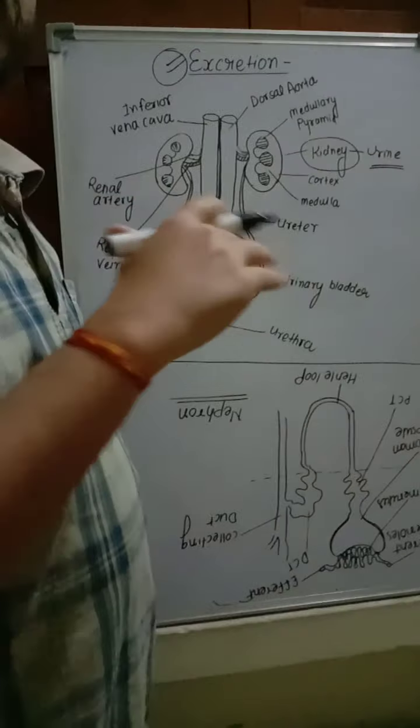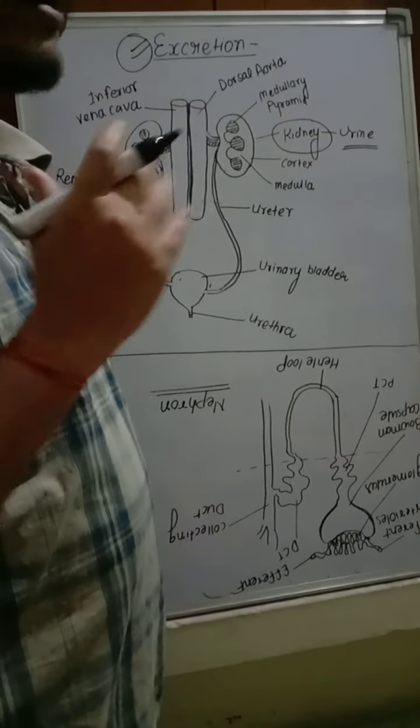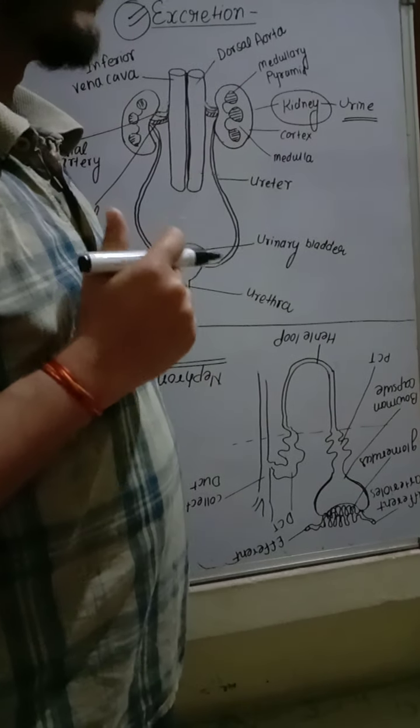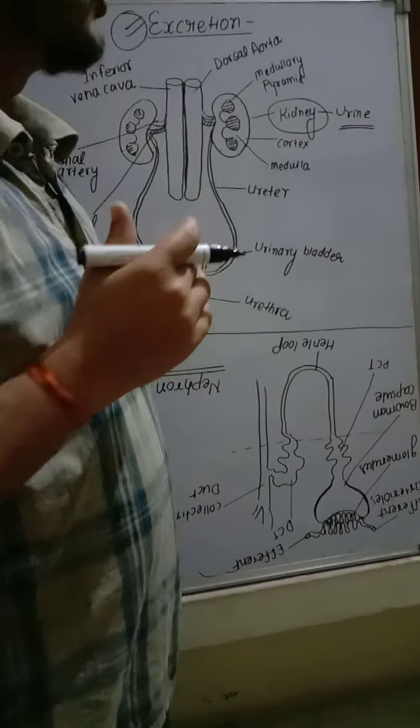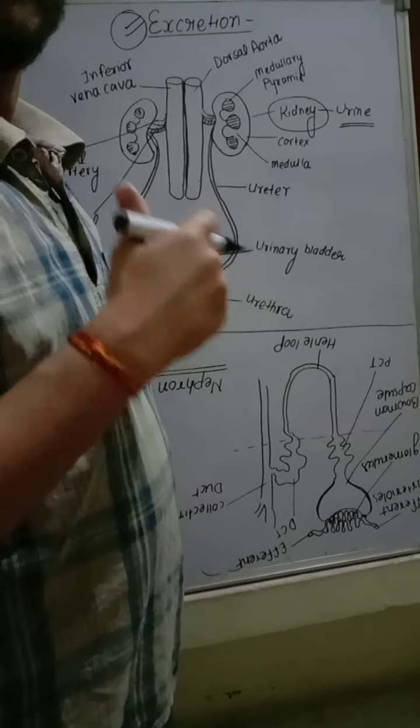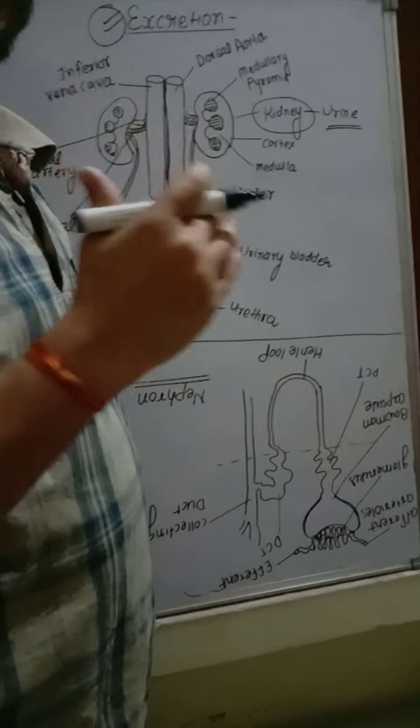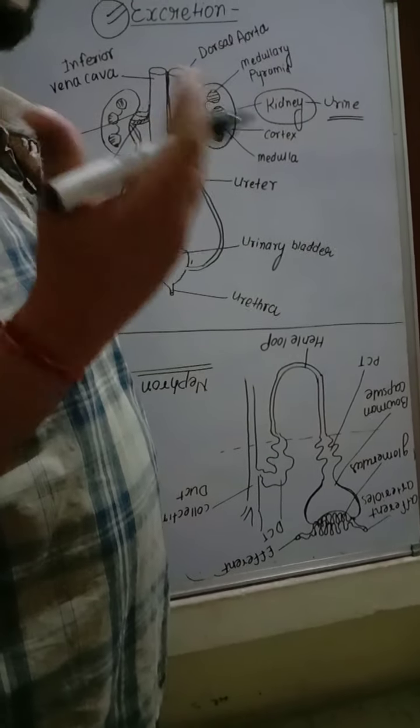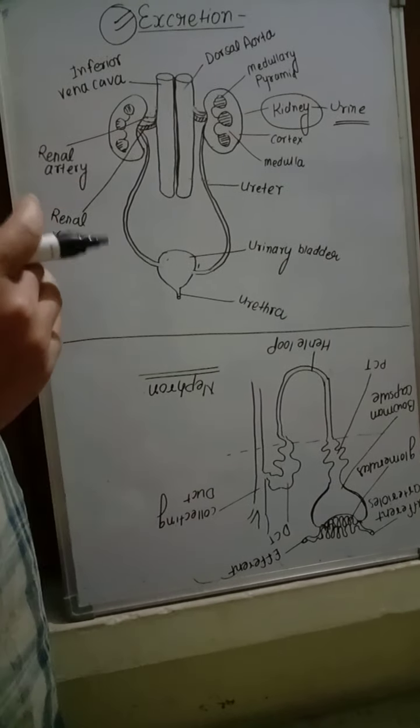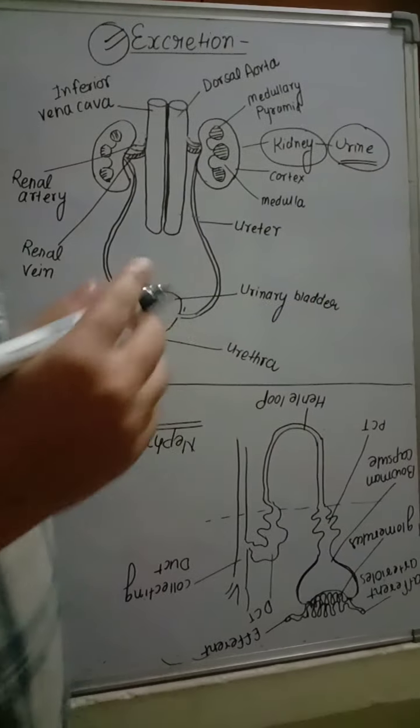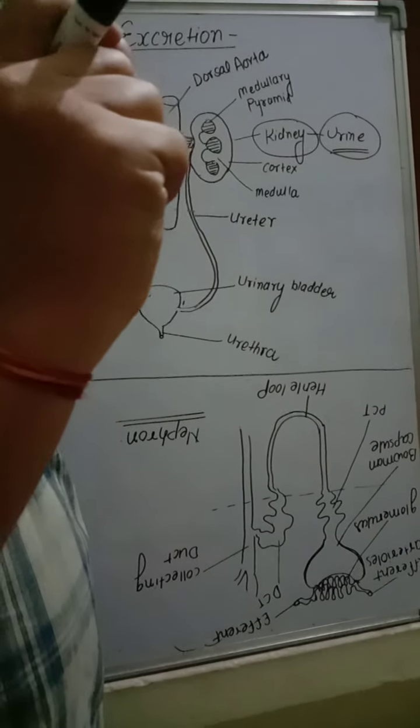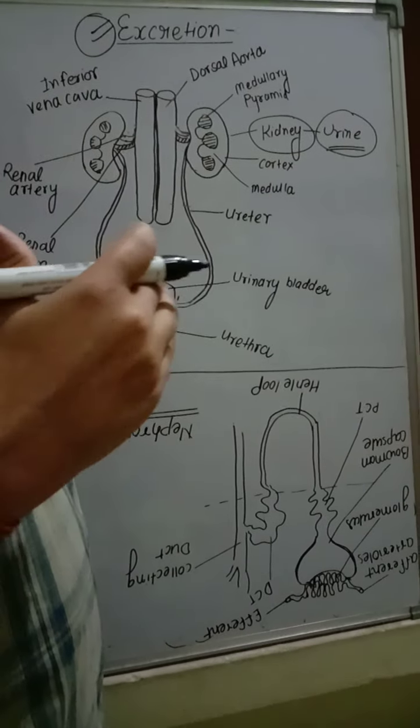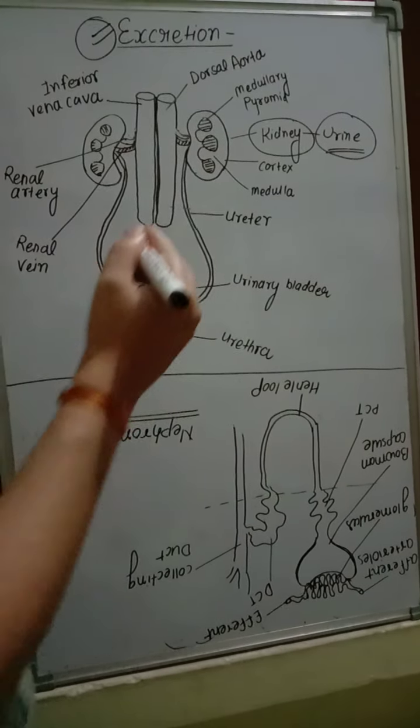Ureotelic - ammonia is most toxic. Ureotelic like mammals and other terrestrial ones. And uricotelic are those living in less water, those having less amount of water. Like in desert, they are uricotelic, uric acid. Uric acid like birds are secreted in the form of pellet. And in some insects and desert reptiles, they are uricotelic.